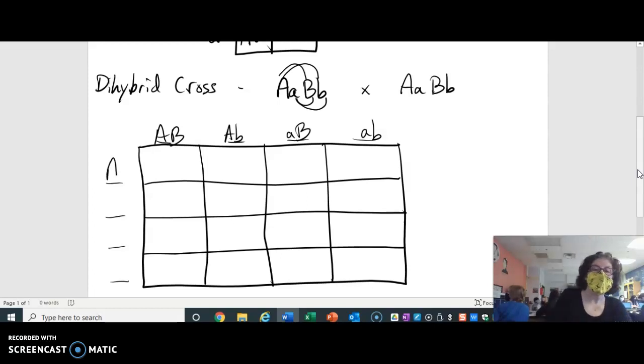Down the side, since the parents are the same, these gametes over here are also going to be exactly the same. This is a classic dihybrid cross. Not all crosses have exactly these letters. Not all crosses that cross two traits are called dihybrid. They're only called dihybrid when both parents are heterozygous for both traits, you see. It's not always true.